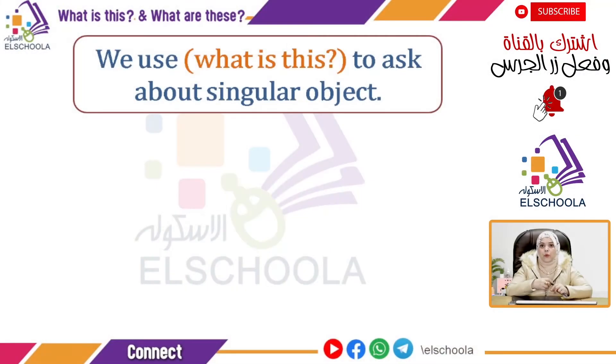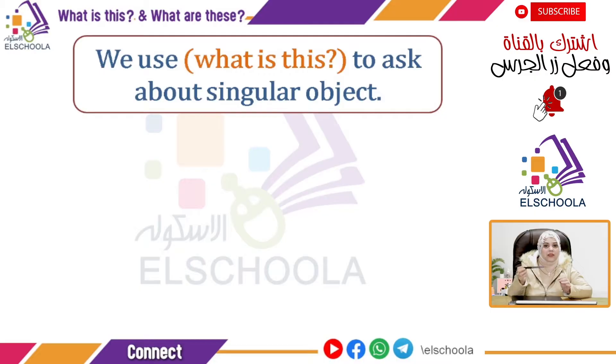Now if we ask the same question about clothes we're wearing, let's see. Today we'll learn: we use 'What is this?' to ask about a singular object — meaning I use this question when I'm asking about something singular, meaning one thing only.